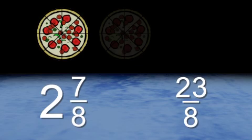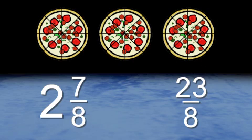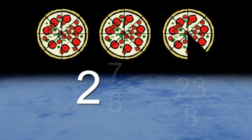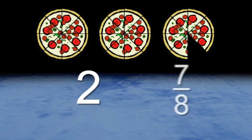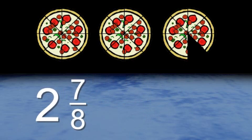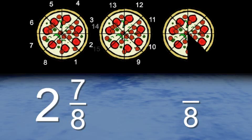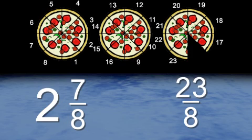Let me explain. Let's say there are three pizzas, and each pizza is sliced into eight pieces. If I eat one slice, you have two entire pizzas and seven eighths of a pizza left — two and seven eighths. Or, you can think of it this way: even though you only need eight slices to make one pizza, you have twenty-three slices, so you can write all of this as twenty-three eighths.